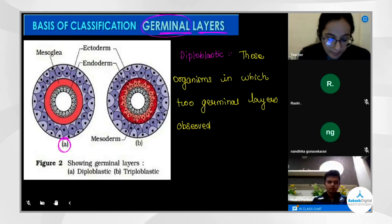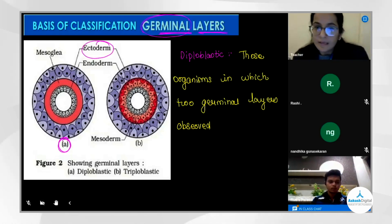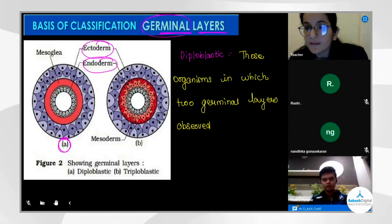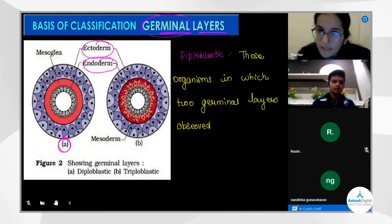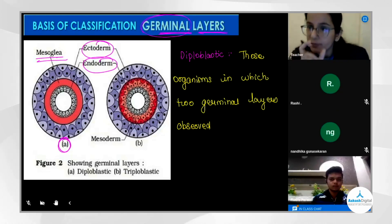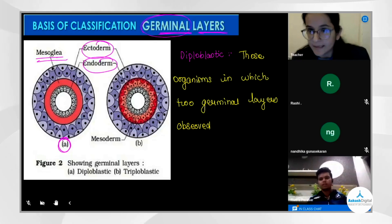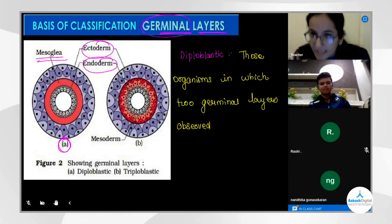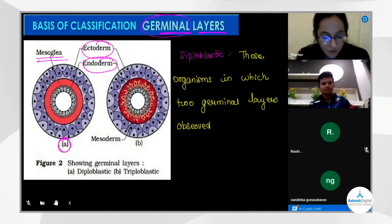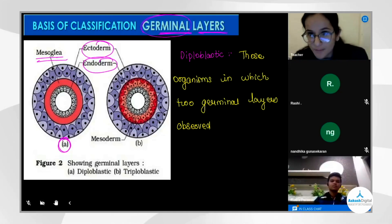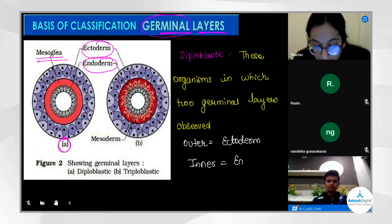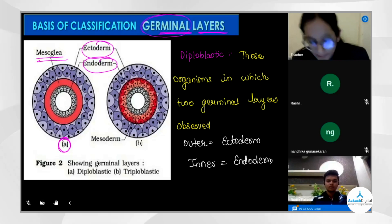In the diagram, the purple layer is the ectoderm and the grayish layer is the endoderm. Between ectoderm and endoderm, Rudra correctly identifies the mesoglia layer. 'Meso' means middle, and 'glia' is a non-cellular, jelly-like substance. So in diploblastic organisms: outer layer is ectoderm, inner layer is endoderm, and in between is the non-cellular gelatinous mesoglia layer.